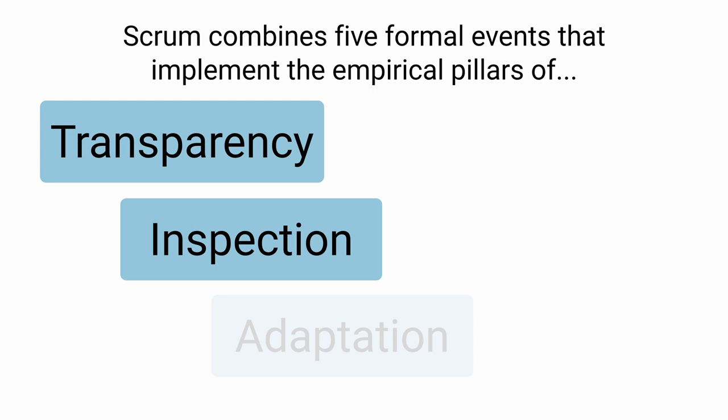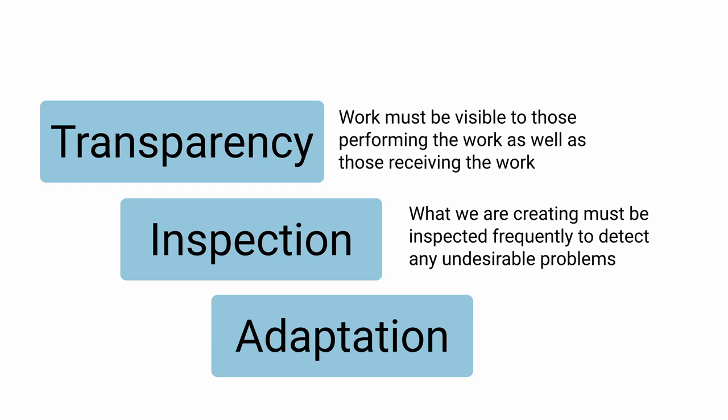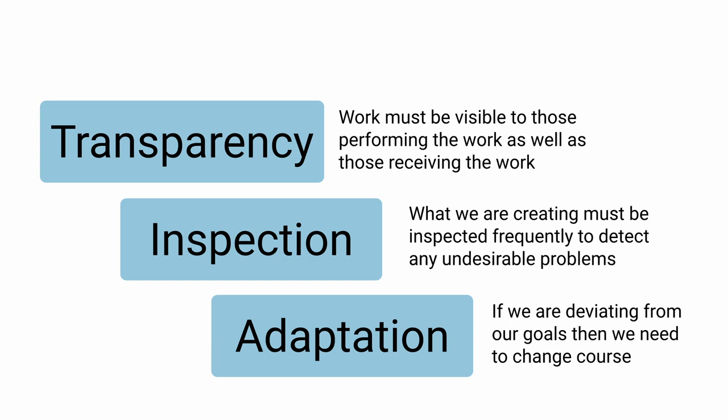Transparency: work must be visible to those performing the work as well as those receiving the work. Transparency enables inspection — inspection without transparency is misleading and wasteful. Inspection: what we are creating in the team and the progress towards agreed goals must be inspected frequently to detect any undesirable problems. Inspection enables adaptation. Inspection without adaptation is considered pointless, as Scrum events are designed to provoke change. Adaptation: if we are deviating from our goals then we need to change course. The sooner an adaptation is made the better, but this is difficult without self-management or empowerment.